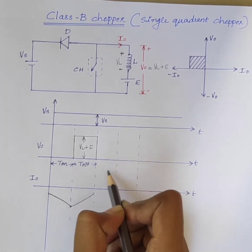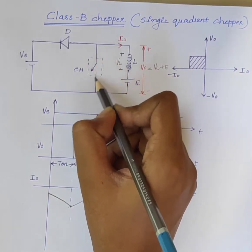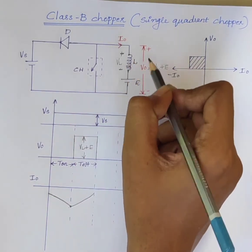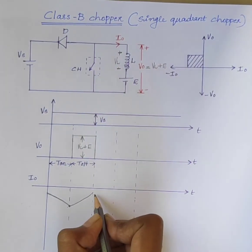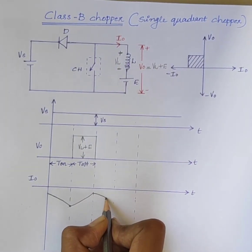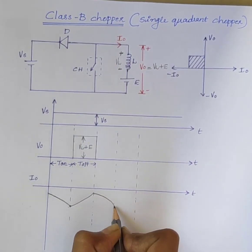Again, during the on time, the chopper is in the on state. The output voltage is 0 and the output current increases in the negative direction.